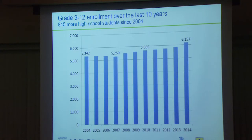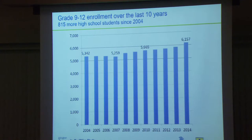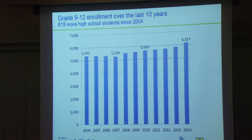For high school: we started at 5,342 and this year we're up to 6,157 — a growth of 815 more high school students. Our average high school is about 1,900 seats, so this is about 45% of a high school in terms of growth.